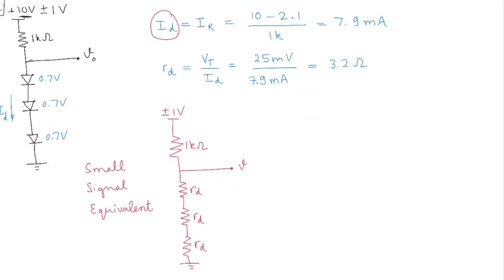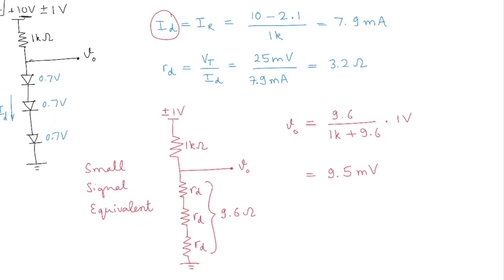Now we can calculate Vo. The three diodes each have Rd of 3.2 ohms, giving a total of 9.6 ohms. The output voltage Vo equals 9.6 divided by (1k plus 9.6) times 1 volt, which turns out to be 9.5 millivolts. So our input is 10 volts plus or minus 1 volt, and the corresponding output Vo is 2.1 volts plus or minus 9.5 millivolts. That's how you attempt part a.